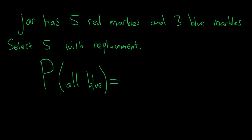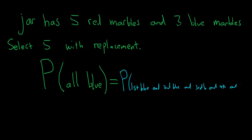So if they're all going to be blue marbles, that means the first one is blue. The key word here is 'and' — we basically have to multiply.